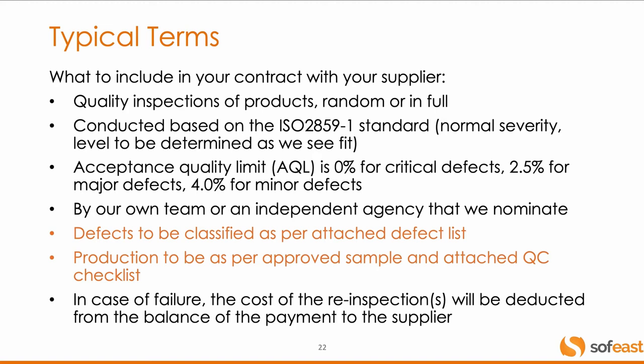I mentioned the terms that you need to include on your purchase order. Here are some typical terms — and as you can see highlighted, it should mention your defect list, your approved sample, and also your QC checklist or product specification, whatever you call it. If there's any failure in inspection or testing, it should be at the cost of the supplier. If you get all this written in advance and confirmed in writing by the supplier before you wire any money, it's going to be much easier to enforce.